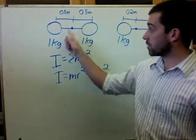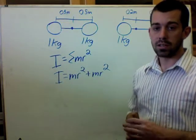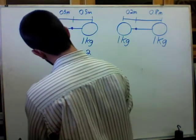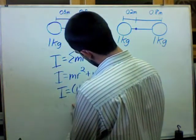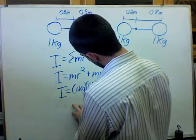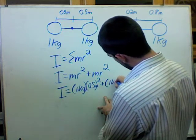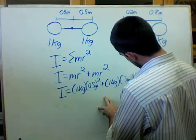Now, I know in both cases that the mass and the radius are going to be the same: one kilogram and 0.5 meters, one kilogram and 0.5 meters.